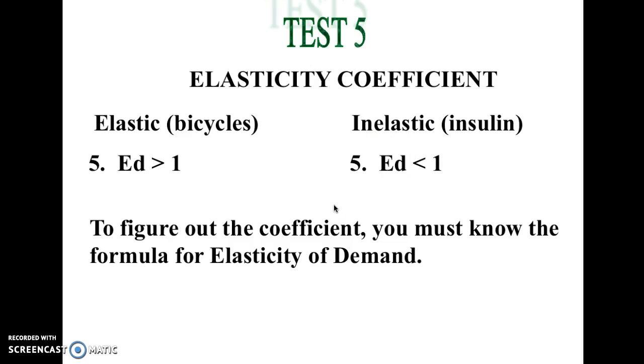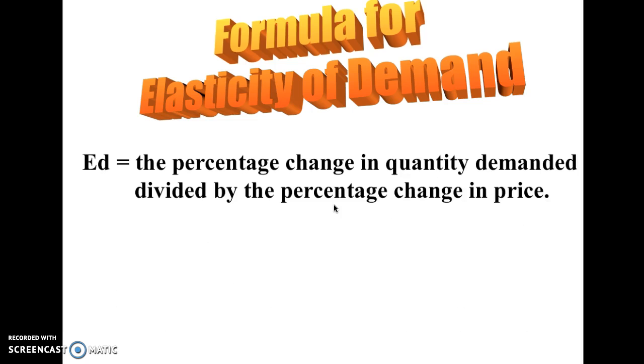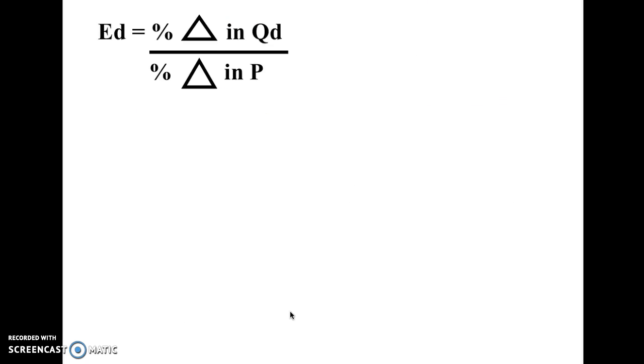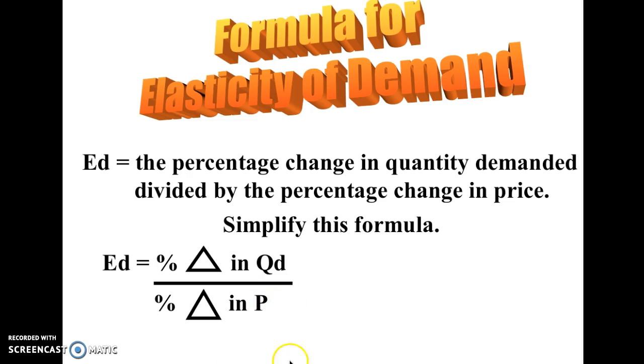But you have to be able to figure this out. And even though we are not going to force you to do this on a test, it is good to know how they actually figure it out. So basically, it is the percentage change in quantity demand over the percentage change in price. So to give this to you a little more simply, it's a way of saying how strongly will people react? How much will they change their purchasing due to a change in price?